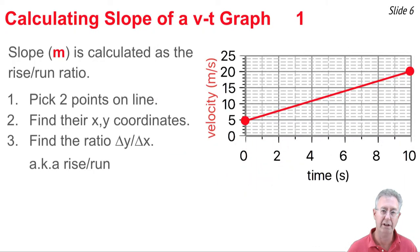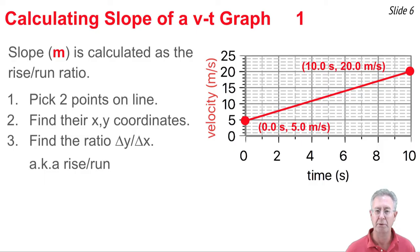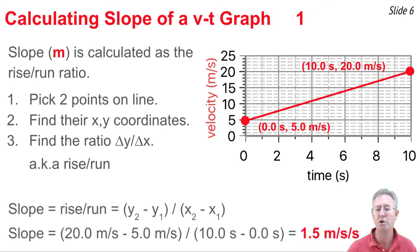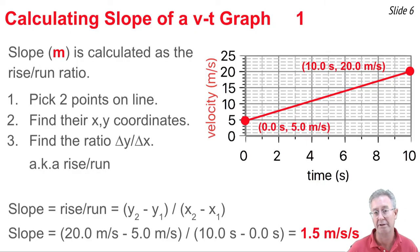How do you calculate the slope of a line on a velocity-time graph? First, pick two points on the line whose coordinates are clearly known. Then find the x, y coordinates of those two points. I picked the first point — coordinates 0 seconds and 5.0 m/s — and the last point — coordinates 10 seconds and 20.0 m/s. For the third step, use these coordinates to calculate the change in y divided by the change in x. The change in y is 20 m/s minus 5 m/s, giving 15 m/s. The change in x is 10 s minus 0 s, giving 10 seconds. Dividing gives 1.5 meters per second per second. That's how you calculate the slope of a line on a velocity-time graph.